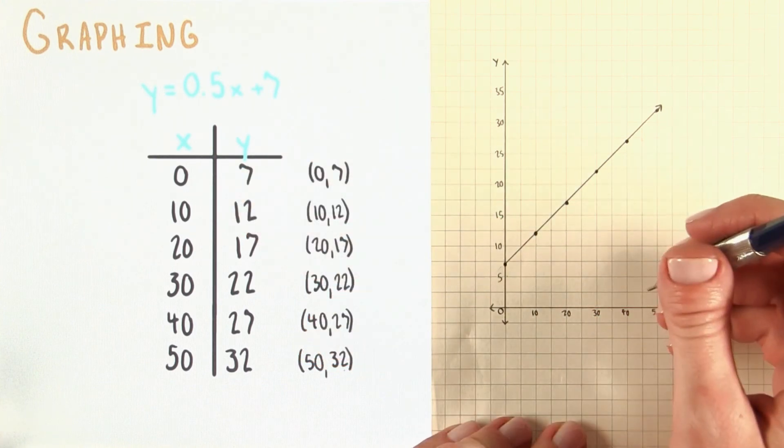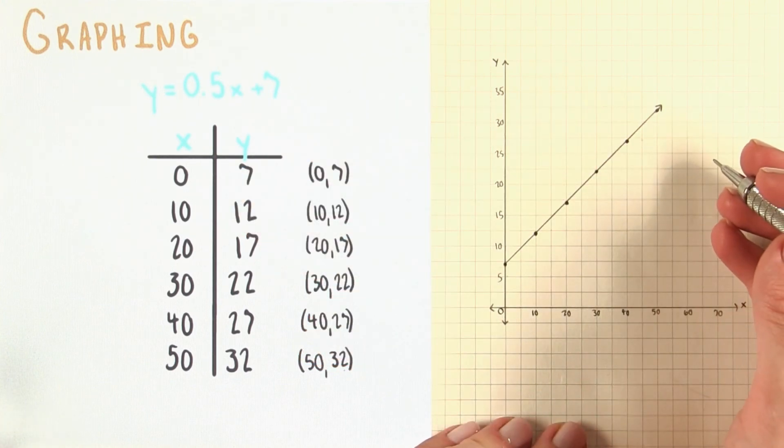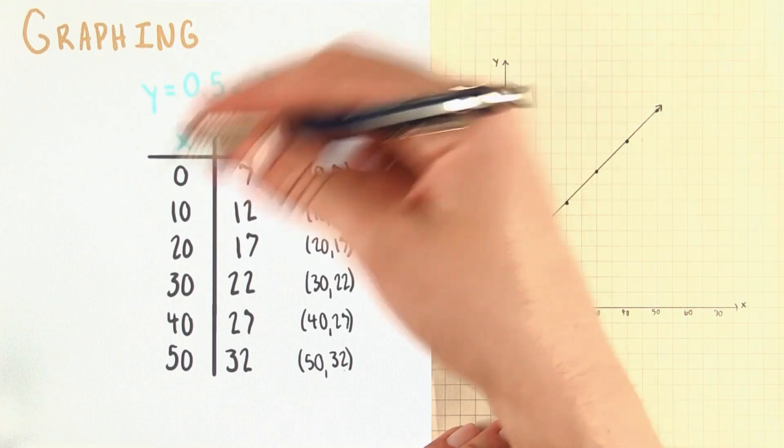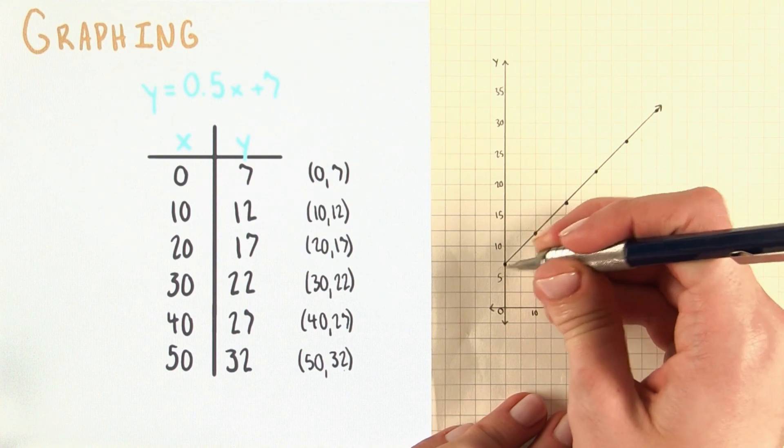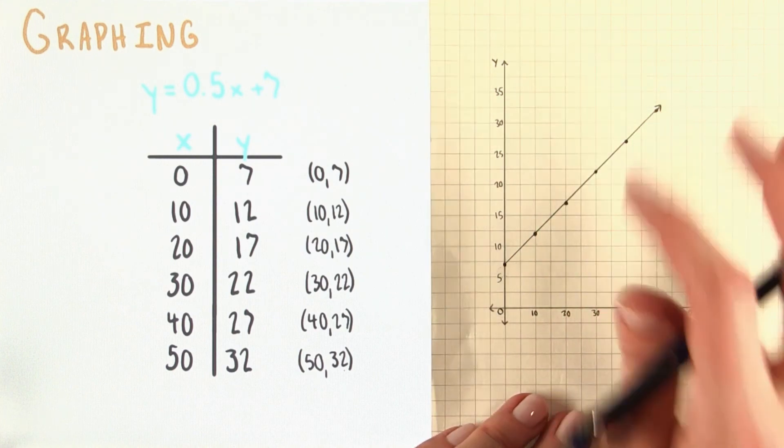This would be very different though if we're graphing other kinds of equations that don't necessarily correspond to things that can't have negative quantities. So with most graphs, you'll see an arrow on the other end of the line as well. We'll see that in later examples.